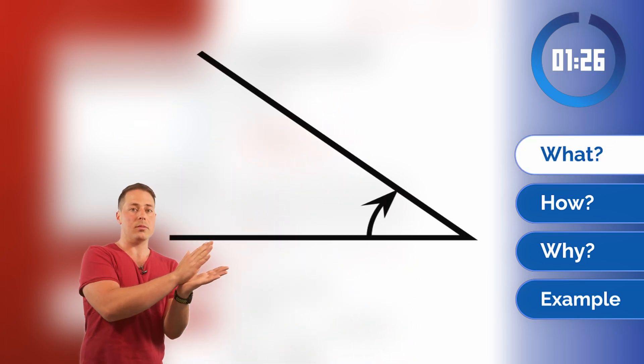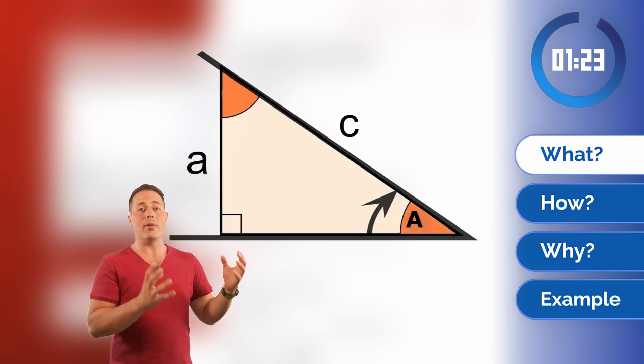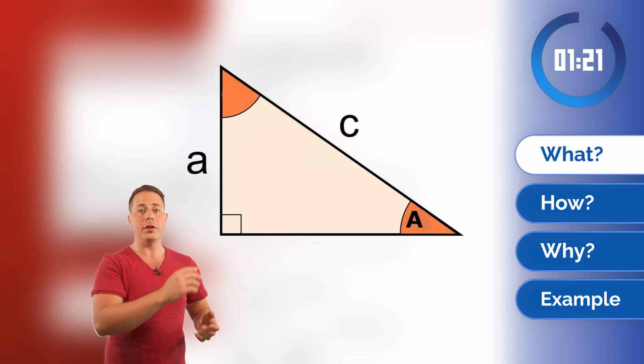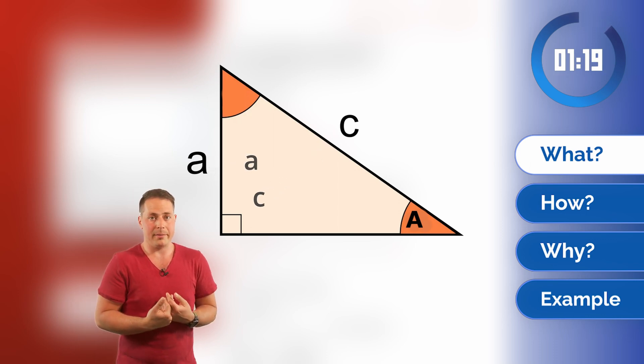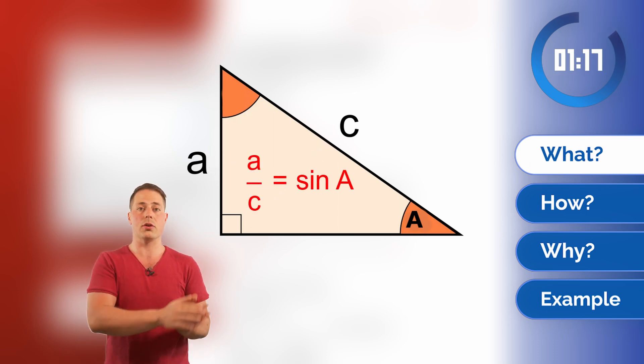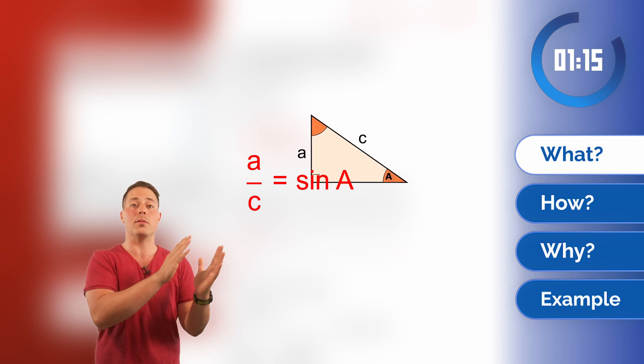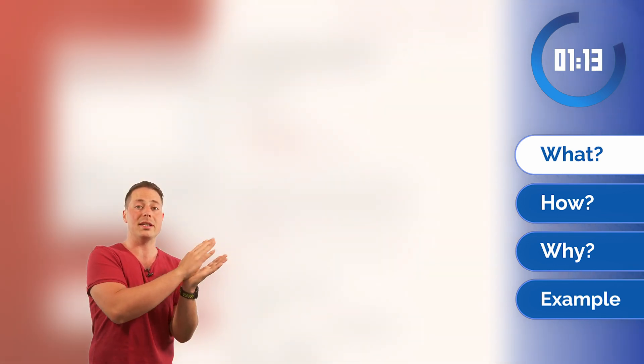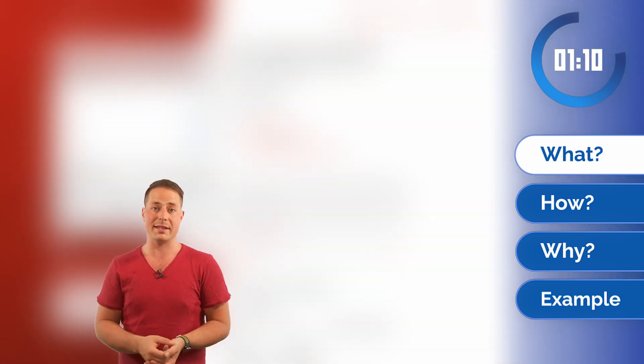What is the sine? So when we have an angle and we can turn it into a right triangle, the ratio between the opposing side and the hypotenuse is what we call the sine. And this is intrinsic to the angle. So no matter how big or small the triangle is, as long as the angle is the same, the sine will always be the same. This ratio will always be the same.